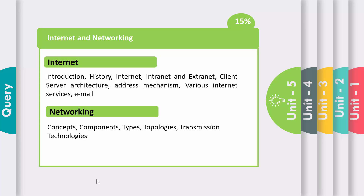The second part contains the concept of networking and components of networking, types of networks, types of topologies, and transmission technology. Network means two or more computers connected with each other. The way computers are connected is called topology. We also describe all types of topology and transmission technology — meaning we can transmit messages in a point-to-point manner or in a broadcast manner.